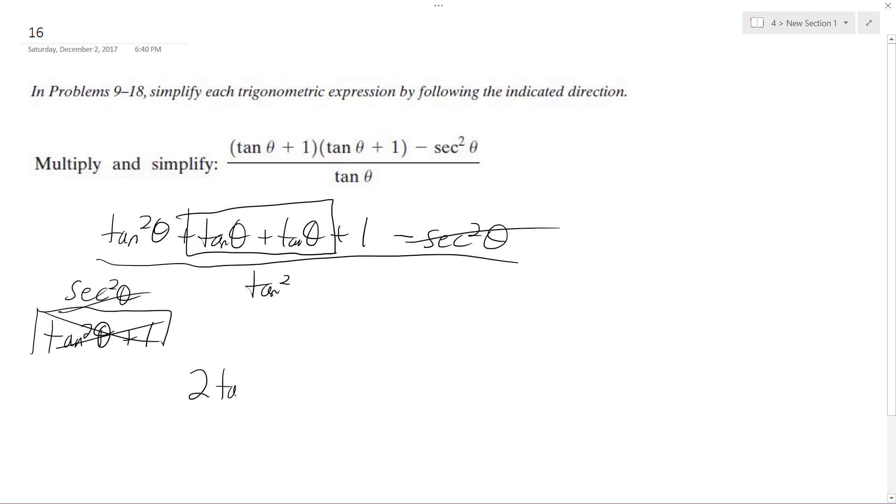So we get two tangent theta plus one, all over tangent squared theta. Oh, I made a mistake, it's just plus.